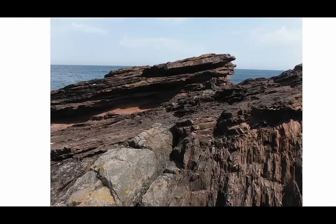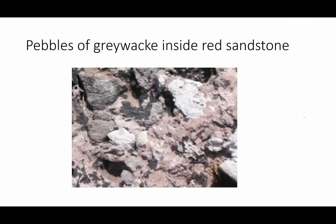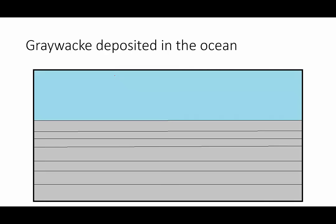We would call this contact an angular unconformity. Even better, at the bottom of the red sandstone, he found that there were pieces of the graywacky. So clearly, the graywacky formed first, and the red sandstone incorporated it when it formed. How did this happen?